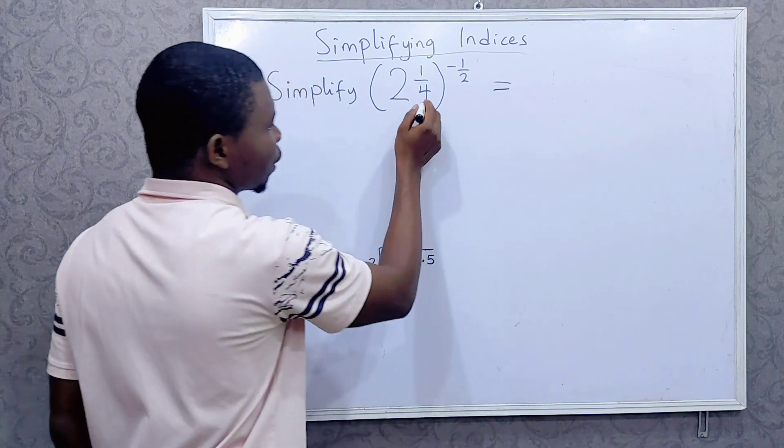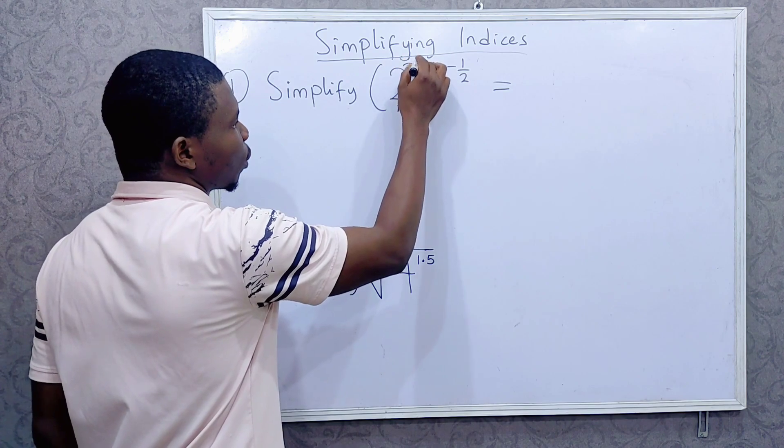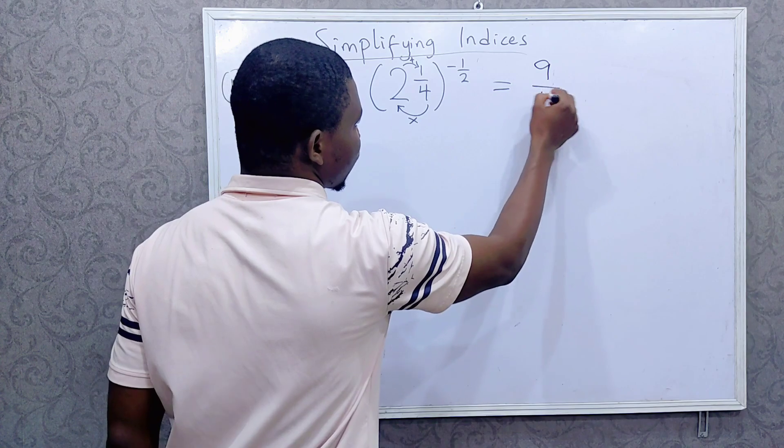So when you change this to improper fraction, this would be 4 times 2 plus 1. 4 times 2 is 8 plus 1 is 9. So we have 9 over 4.